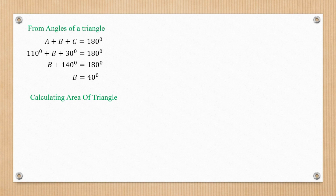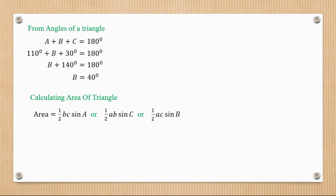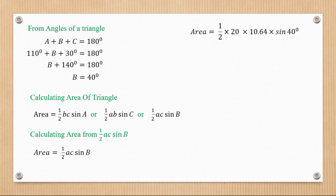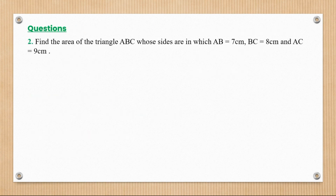Now we calculate the area using the trigonometric area formula. The area can be found three ways: ½bc·sin(A), ½ab·sin(C), or ½ac·sin(B). For this example we use ½ × a × c × sin(B) — that is, ½ × 20 × 10.64 × sin(40°). Computing this gives an area of 68.4 centimeters squared. That is how we find the area of such a triangle.